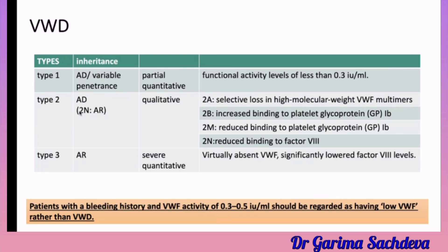Qualitative deficiency is where the factor levels are normal but the von Willebrand factor is not functioning properly, because it requires platelet glycoprotein 1b and 2a to function. If these proteins are defective, the factor concentration is normal but function is impaired — that is qualitative. Quantitative deficiency is where the value of the factor itself is reduced.